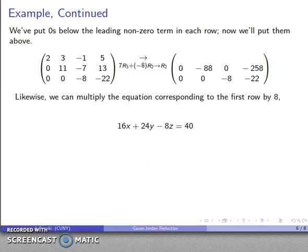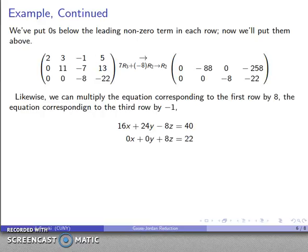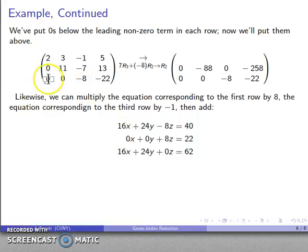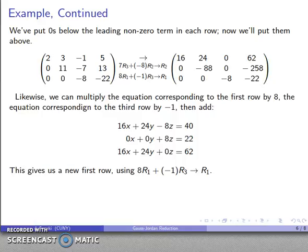We can do the same for the first row. I'll multiply the equation corresponding to the first row by 8, and multiply the equation corresponding to the third row by negative 1. When I add those two, the z term drops out. Row operation: 8 times the first row plus negative 1 times the third row, stored in row 1. The coefficients of z are equal and opposite, so z is eliminated, giving a new first row.